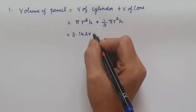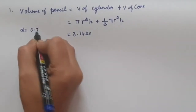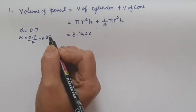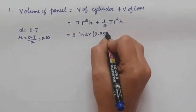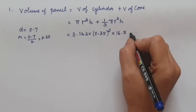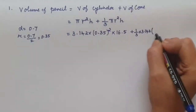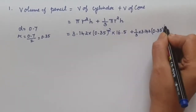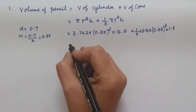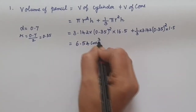We use 3.142 into the radius. The diameter is given as 0.7 in the figure, so our radius will be equal to 0.7 divided by 2, which is 0.35. So our expression is 3.142 × 0.35² × 16.5 (cylinder height) plus (1/3) × 3.142 × 0.35² × 1.5 (cone height). When we use our calculator, we get our answer as 6.54 cm³.